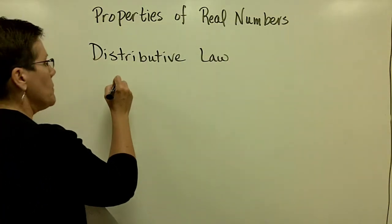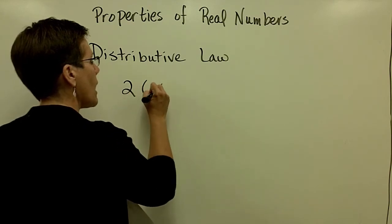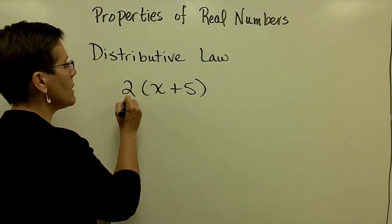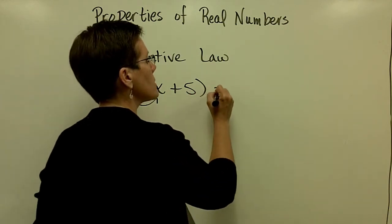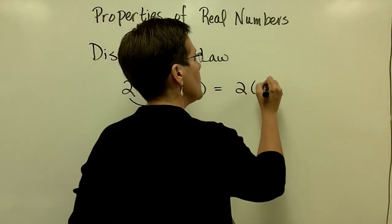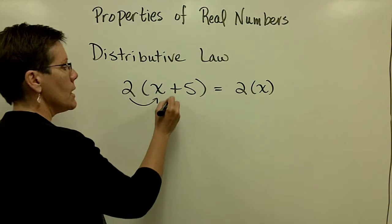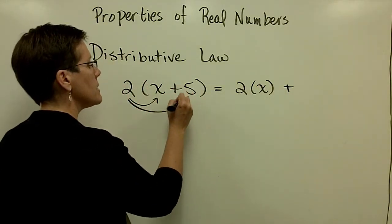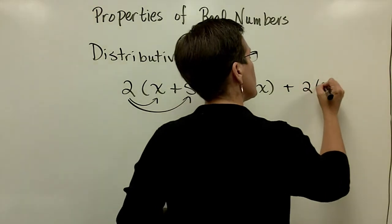An example of that might be 2 times x plus 5. And that means to take the 2 times the x, this is how we wrote it just a minute ago, take the 2 times the x. I've got a plus sign here, I might have a minus sign sometimes, and then take the 2 times the 5.